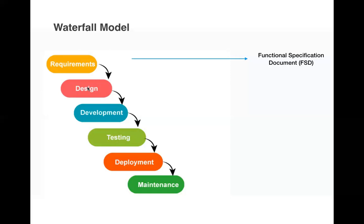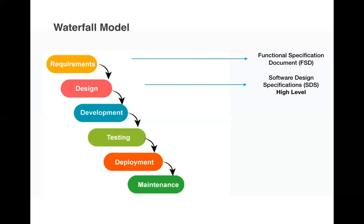In the design phase, the implementation — how the process has to be implemented — is discussed at a high level. They discuss the process flow, error handling, file logging, and properties to be used. This is developed by architects and team leads with strong knowledge of the tool or product. Based on these discussions, they develop a high-level software design specification document.